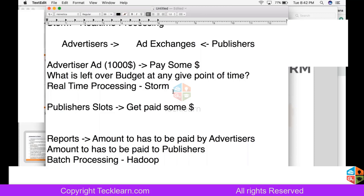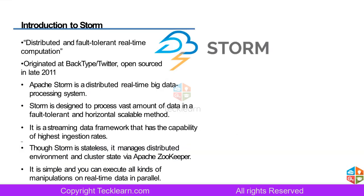Our use case in the company is about real-time processing, so we have selected Storm. We will understand why we use Kafka in upcoming classes. For now, let's understand what Storm is and how it helps in real-time processing. We will cover some terminologies so that from tomorrow we are all on the same page. Storm provides real-time processing in a distributed way.